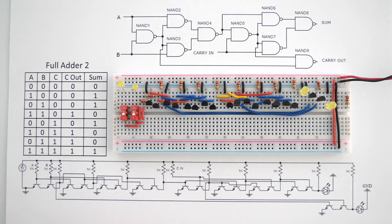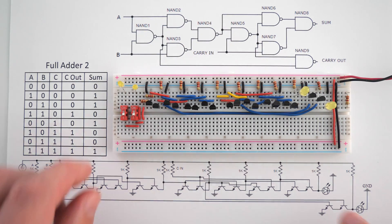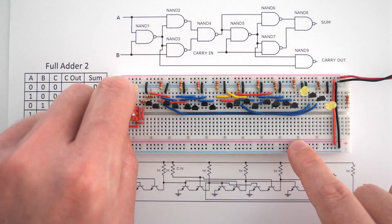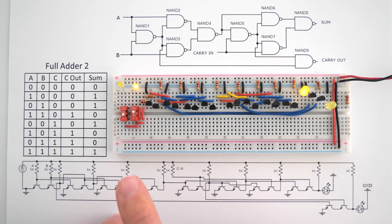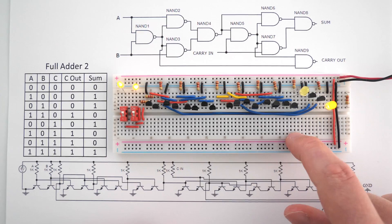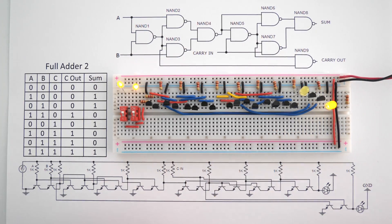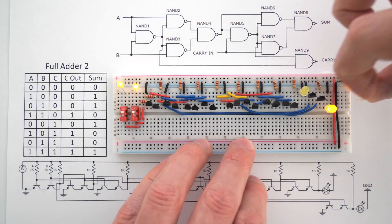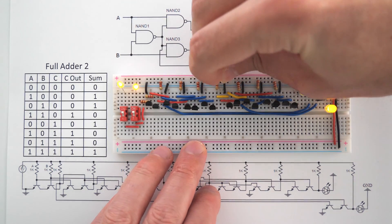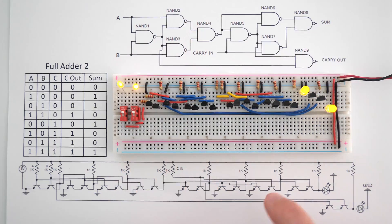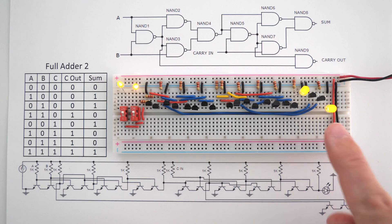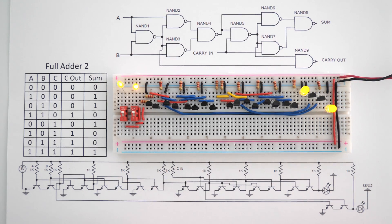We can test to see if this circuit works as expected. We can turn on input A and we have 1 plus 0 equals 1. We can turn on input B and we have 0 plus 1 equals 1. Turn on both — 1 plus 1 equals 2. Now we'll do the carry bit. Our carry in comes in right here, so we'll connect positive 5 volts here, and now we have 1 plus 1 plus 1 equals 3, which is 1, 1 in binary.